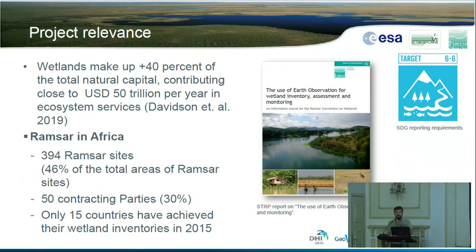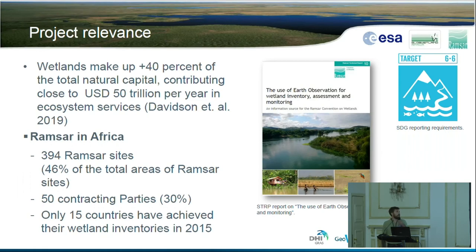Why are we focusing on wetlands? They are one of the very important ecosystem types. Here it is expressed in monetary terms, where the wetlands provide close to 50 trillion US dollars worth of ecosystem services, mostly through water filtration or flood protection.